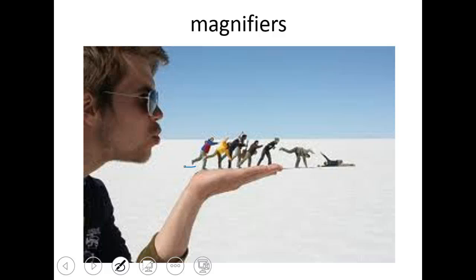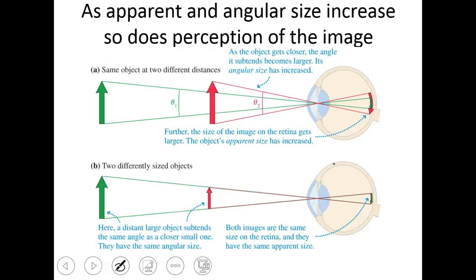Magnification can give us some pretty cool and funky images, as well as be incredibly useful in our daily lives. Here, what we see is that we've created this illusion of people being far away, or people being very small. And so we know, just from common life experiences, that this guy is actually the same size as all of these people. But because he is closer to us, our brain interprets that as bigger than things that are far away.